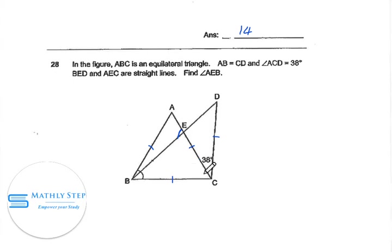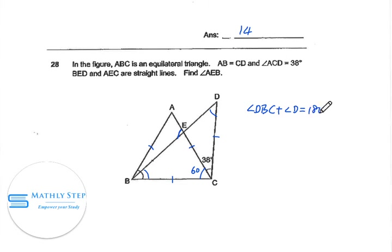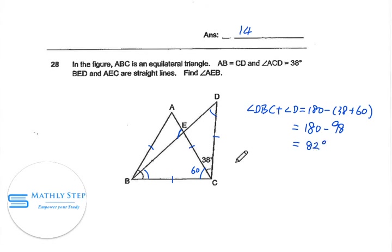Because ABC is an equilateral triangle, angle ABC will be 60 degrees. Since BC and CD are equal, angle DBC and angle D are equal. Angle DBC plus angle D equals 180 degrees minus 38 plus 60, based on this triangle. So that equals 180 minus 98, which is 82 degrees. For each one, angle D equals half of 82, so 82 divided by 2 equals 41 degrees.